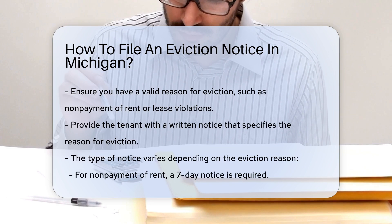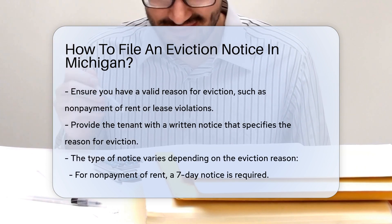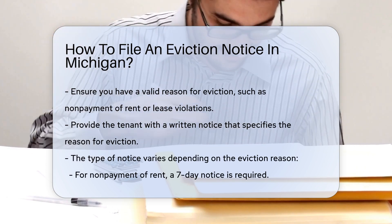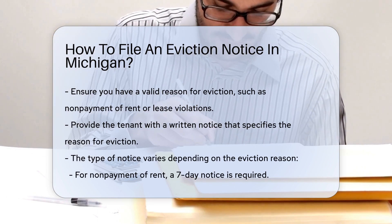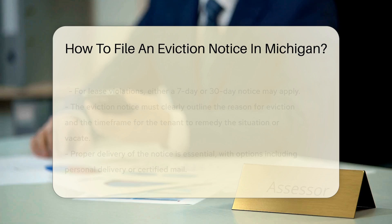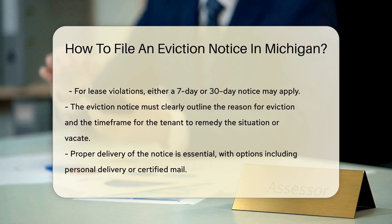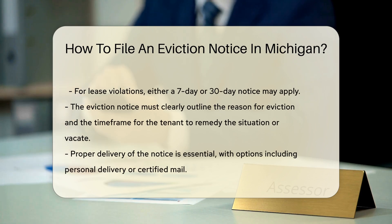Next, you must provide the tenant with a written notice. The type of notice depends on the reason for eviction. For non-payment, a seven-day notice is required. For lease violations, a seven-day or 30-day notice may apply. The notice must clearly state the reason for eviction and the time frame for the tenant to remedy the situation or vacate.